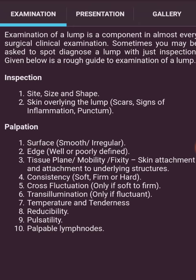First is Inspection — sight. Look at the skin overlying the lump: scars, signs of inflammation, and puncta. Then Palpation — assess the surface: smooth or irregular, and the edge: well or poorly defined.